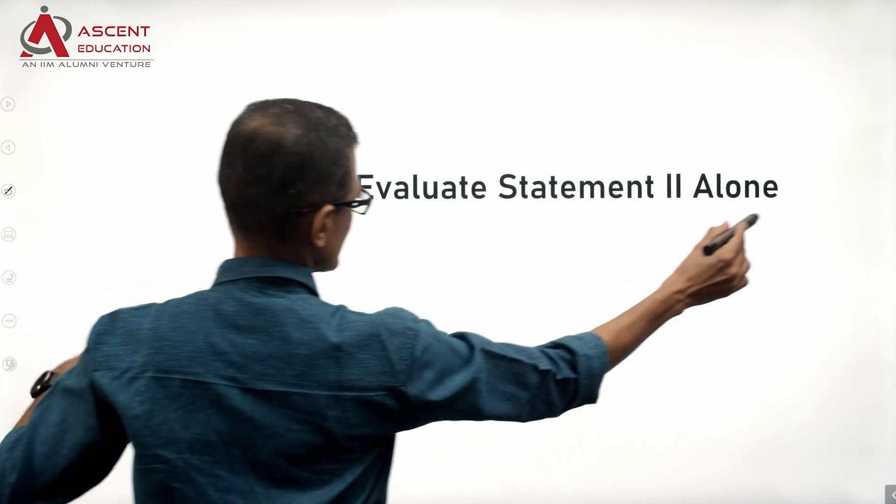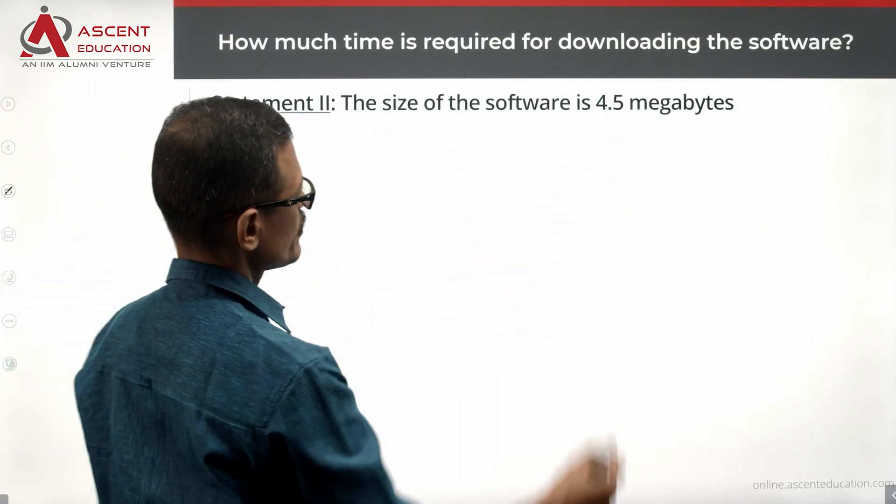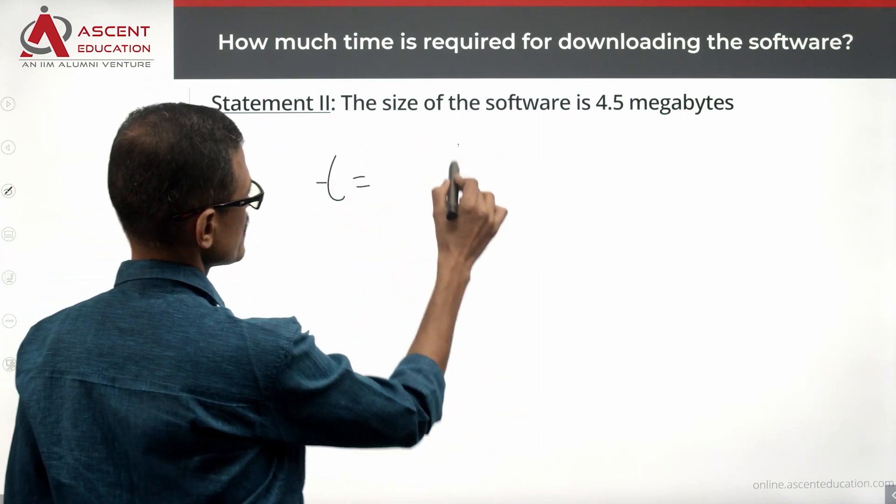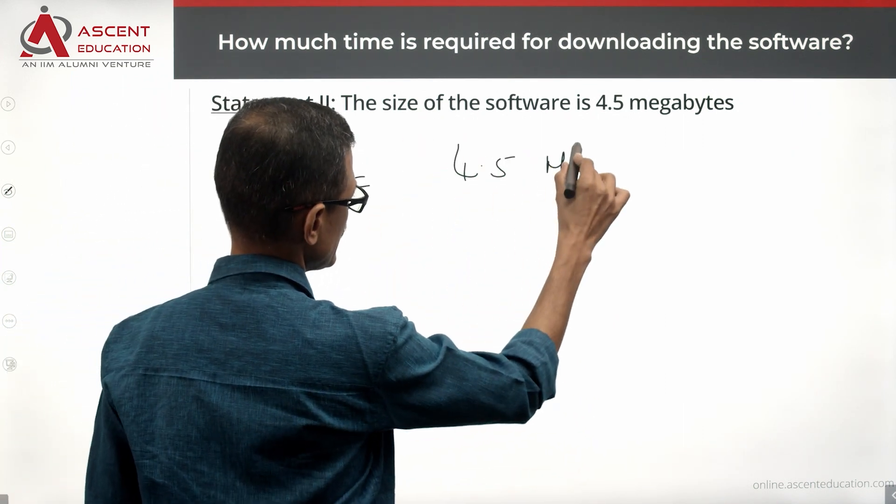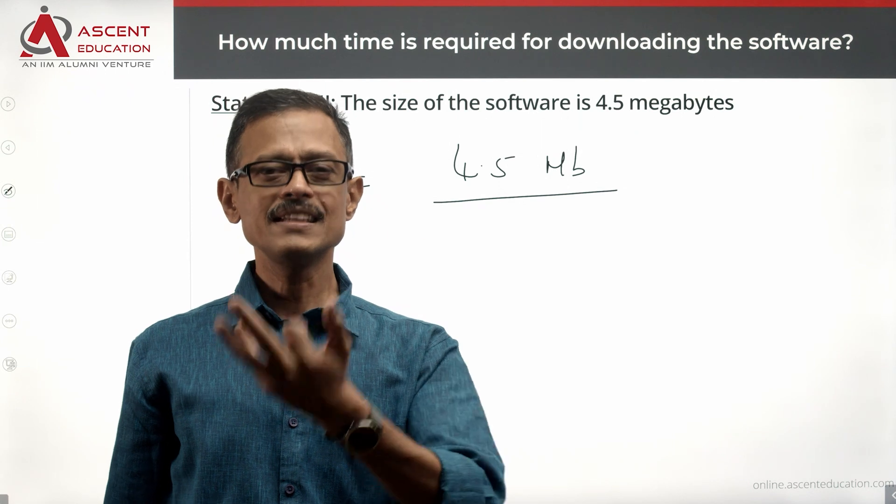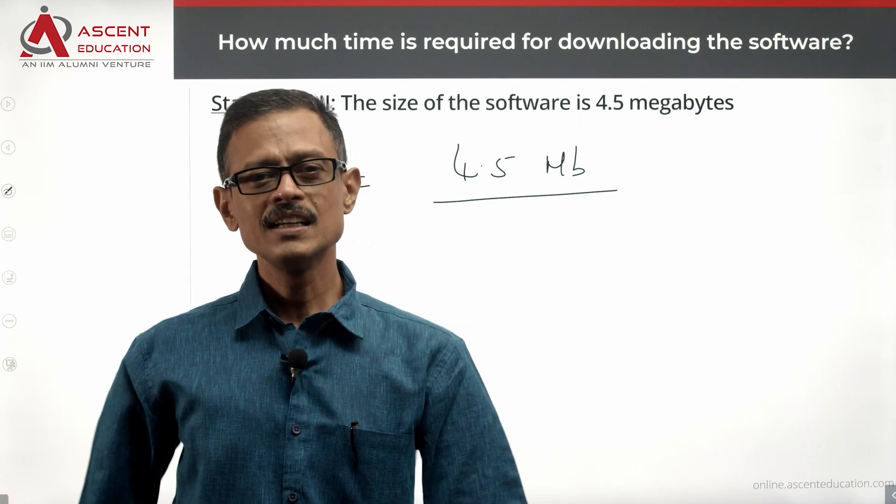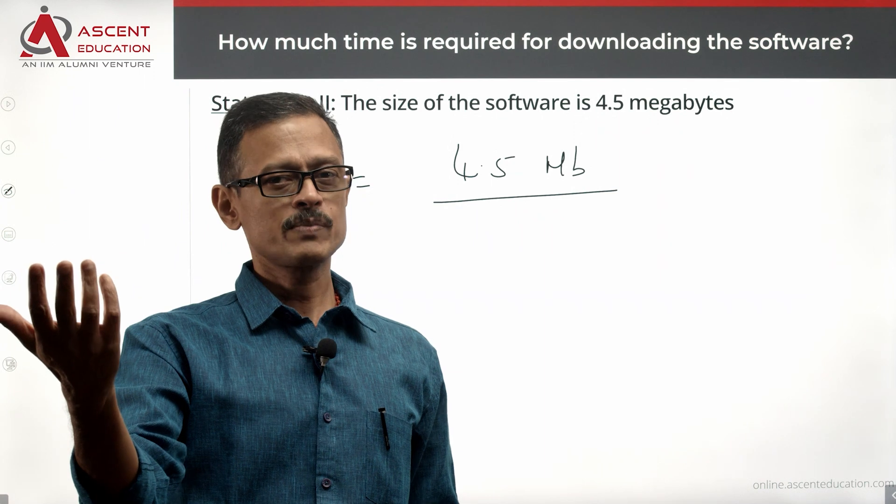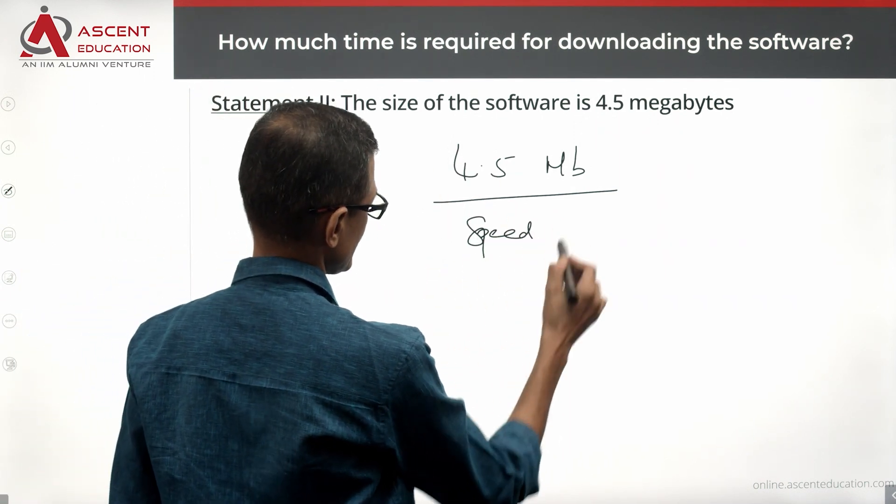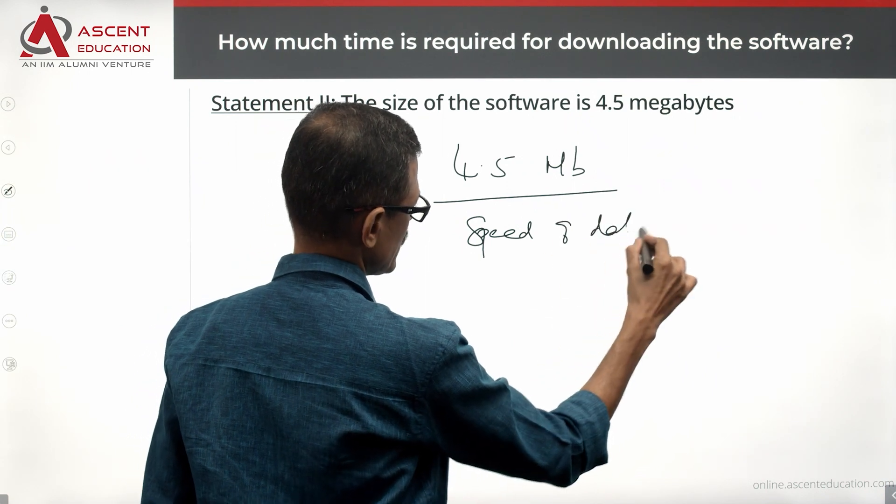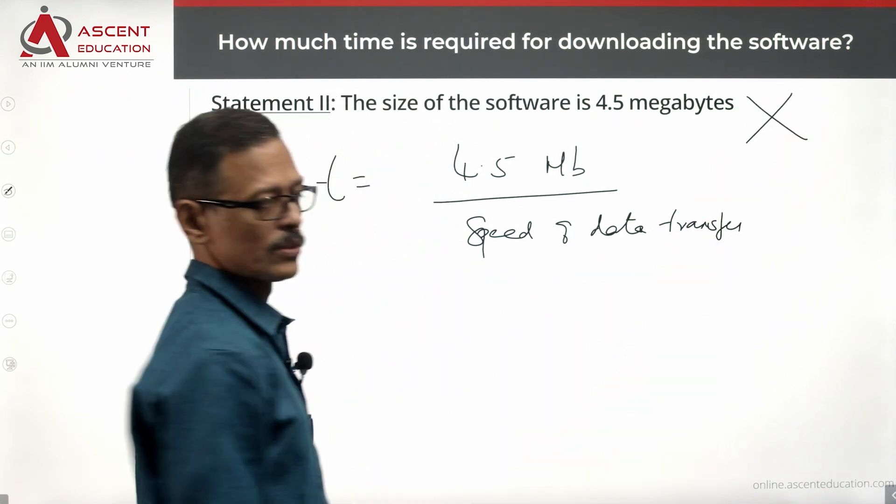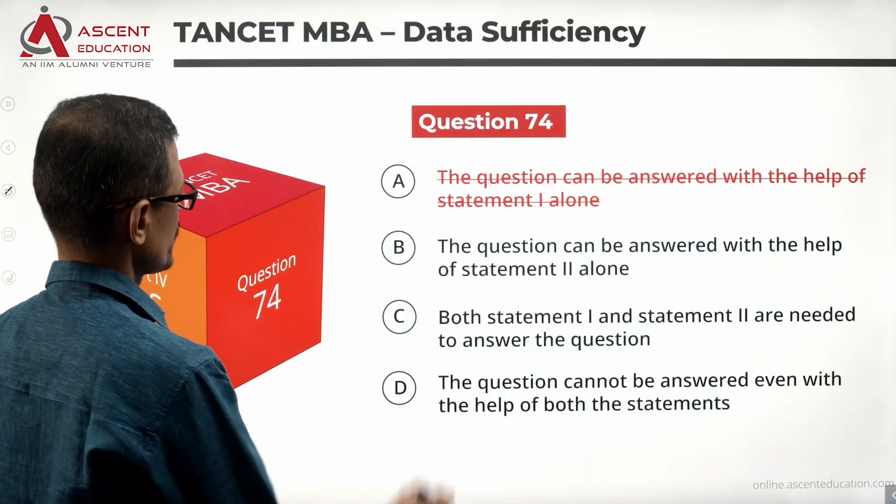Look at statement 2 alone. The size of the software is 4.5 megabytes. So size is equal to 4.5 MB. If it is going to take only 3 seconds, 1.5 megabytes per second, or let's say 4.5 megabytes per second - without knowing the speed or the rate of data transfer, speed of data transfer, we will not be able to answer the question using statement 2 alone. Two alone is not sufficient, rule out answer option B.